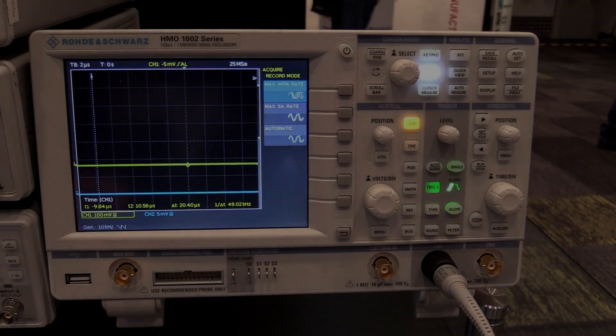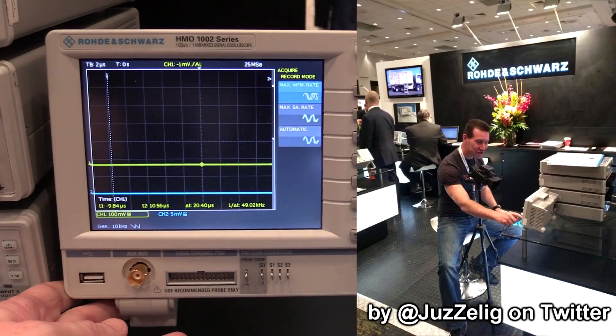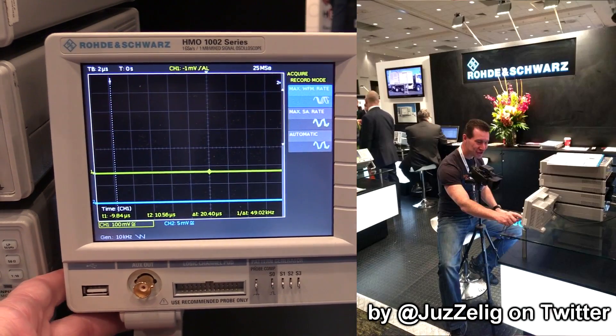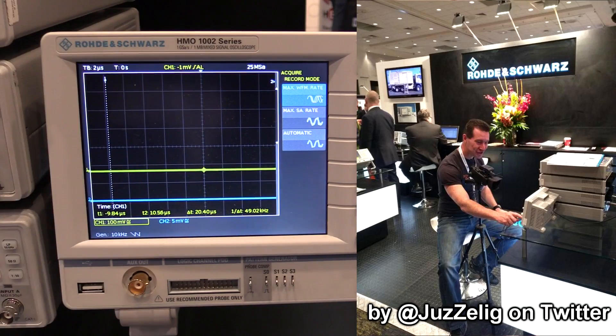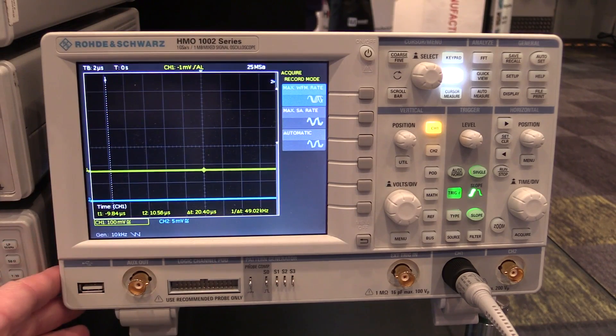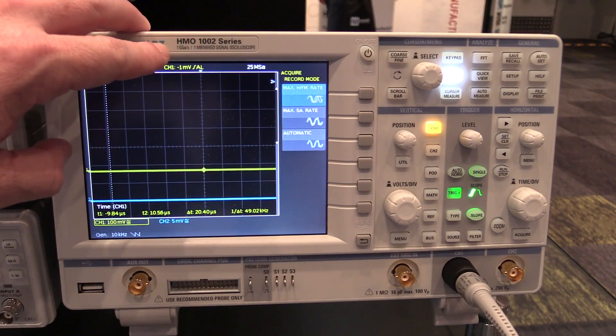Hi I'm at the Rohde & Schwarz stand here at Electronics 2015. I thought I'd just have a quick impromptu check out of this Rohde & Schwarz HMO 1000 series. This is the HMO 1002, the 50MHz model. One gig sample per second.